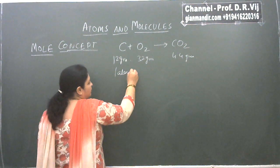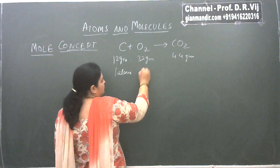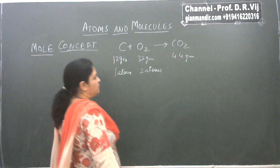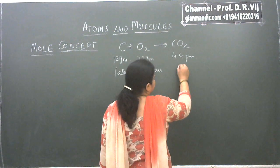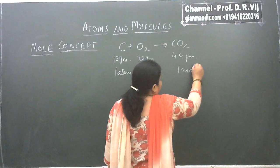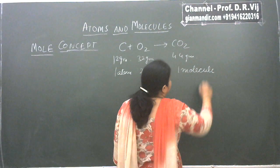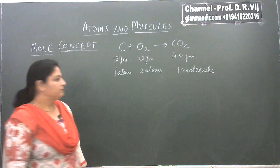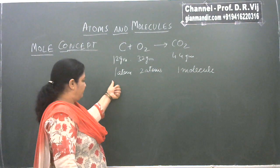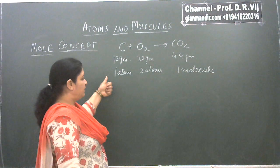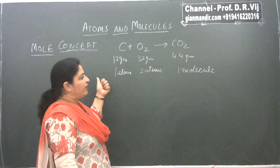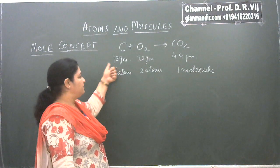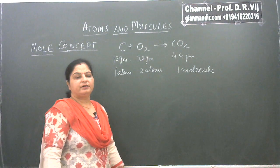We can say one atom of carbon reacts with one molecule of oxygen to give you one molecule of carbon dioxide. It's convenient to express their quantitative relationship by using the number of particles instead of expressing their masses.